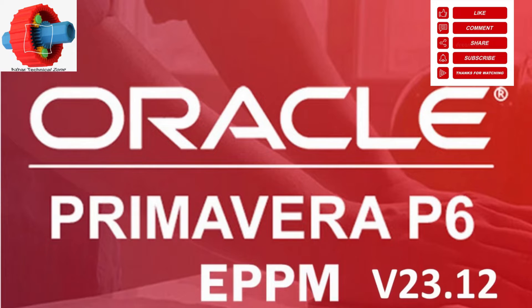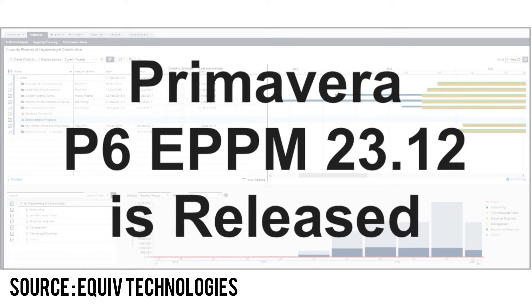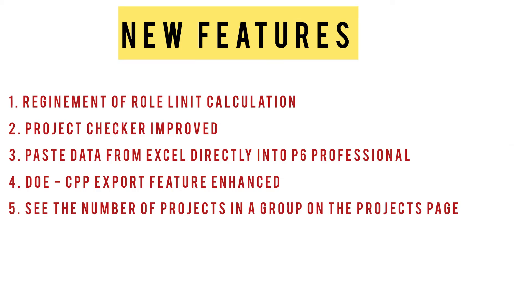Good news for Primavera users. Oracle Primavera P6 has been updated with new version 23.12, with new features and fixes for bugs in the previous version of Primavera P6. The main and important updates are covered here.